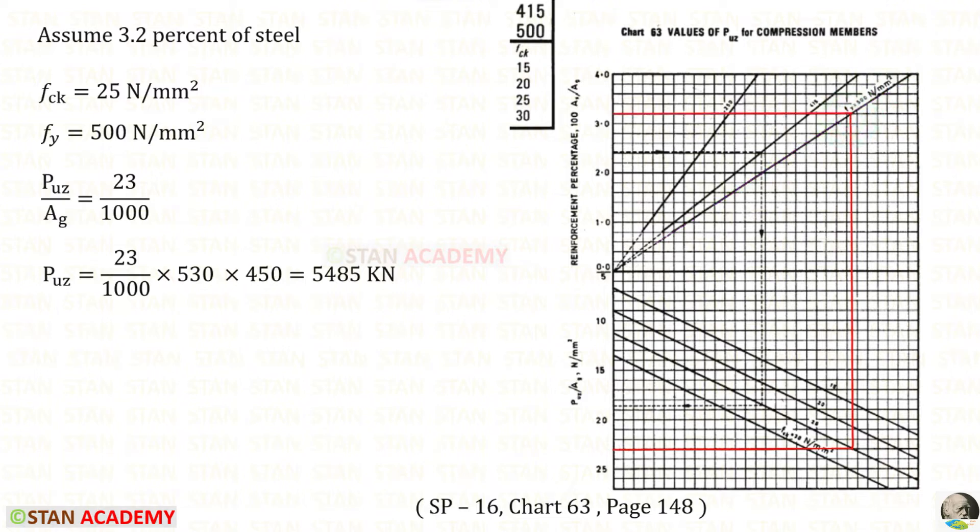This horizontal line should be extended up to this line. We will get this point. Then here, there are four lines. We have to check which line represents our FCK, 25. This is the line representing 25. So, from this point, we have to make a vertical line up to that line. We will get this point. From this point, we have to make a horizontal line. Here, we can see PUC upon AG. This point is 20. This point is 21. This point is 22. And this point is 23. So, PUC upon AG is 23. We are dividing that by 1000 because we want the final answer in kilo Newton. Ag is the gross area. We know 530 into 450. For PUC, we will get 5485 kilo Newton.